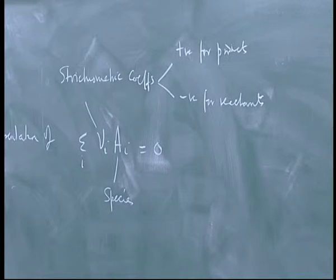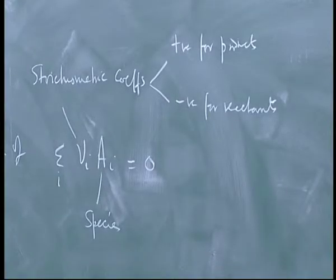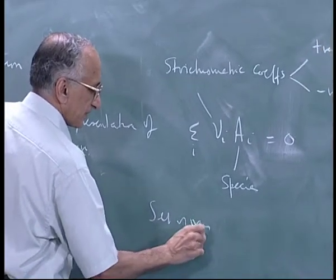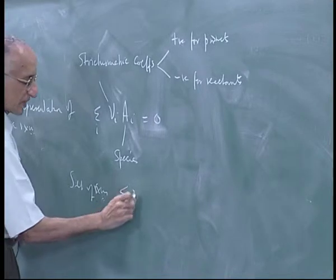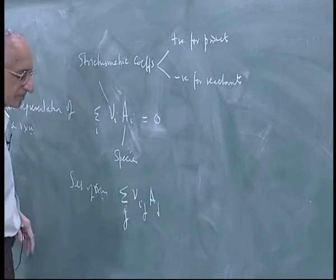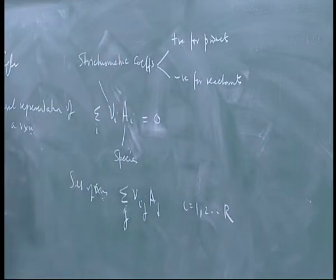The stoichiometric coefficients by convention are positive for products and negative for reactants. And you know by experimental evidence that all the nu i's you also know from atomic theory. The nu i's are always rational numbers. Certain number of moles of one species will react with certain number of moles of another species. These are integral numbers so you can represent nu i's as rational number. If I have a set of reactions, I write this as sum over i nu ij sum over j sorry for i equals 1, 2 etc up to r reactions.